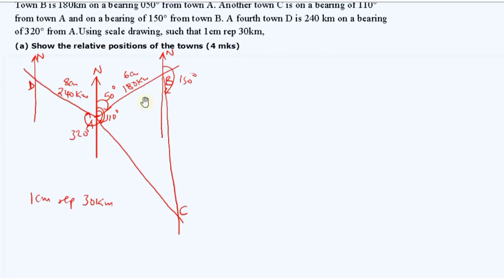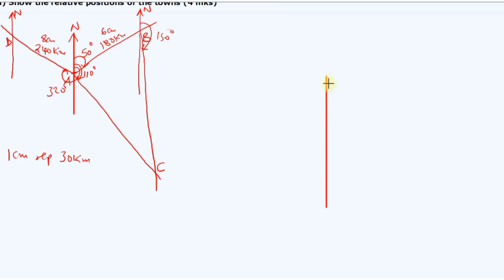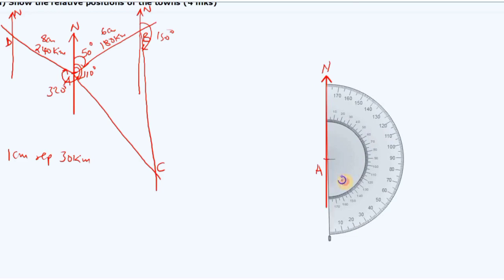To have the scale drawing, we begin with point A. At point A we locate the other points as instructed — point B first. We draw a true northing. Using a protractor, we measure 50 degrees clockwise from the true north to locate town B.